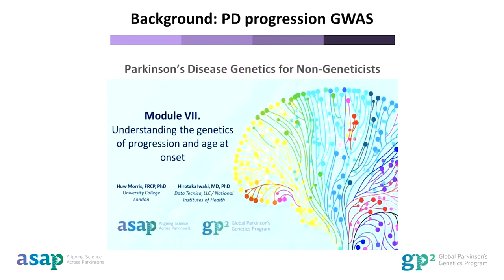Starting with some background about GWASs of Parkinson's disease. I'm not going to cover this in a lot of depth because it has already been covered in the Parkinson's Disease for Non-Geneticists course in module 7, and also as part of the Beginner Bioinformatics for Parkinson's Disease Genetics course in module 3. Both modules went over important concepts and background for understanding the genetics of progression and age at onset, and you also learned what a GWAS is, as well as challenges and limitations.